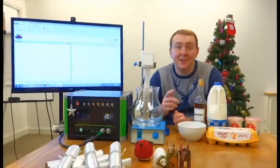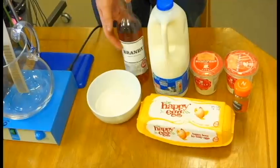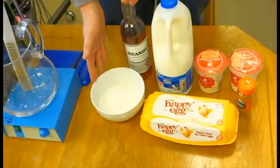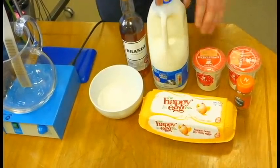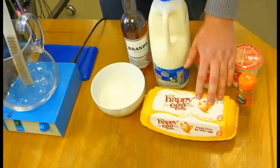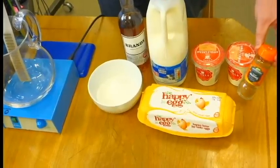To make the signature ITS eggnog you'll need the following ingredients: a bottle of brandy, half a bowl of sugar, 2 litres of milk, a litre of single cream, half a dozen eggs, and a dash of ground nutmeg.